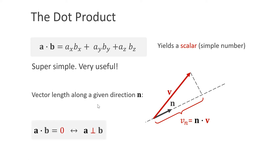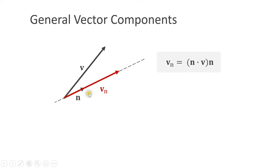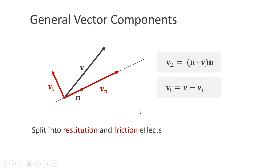A second important use case is to decide whether two vectors are perpendicular to each other — in this case their dot product is zero. A third use case is to compute general vector components. Given a vector v and a unit vector n, we measure the length of v in the direction of n and multiply n by this length to get the vector vn. We can compute the perpendicular component by subtracting vn from v. Such decomposition is important to handle restitution and friction effects.